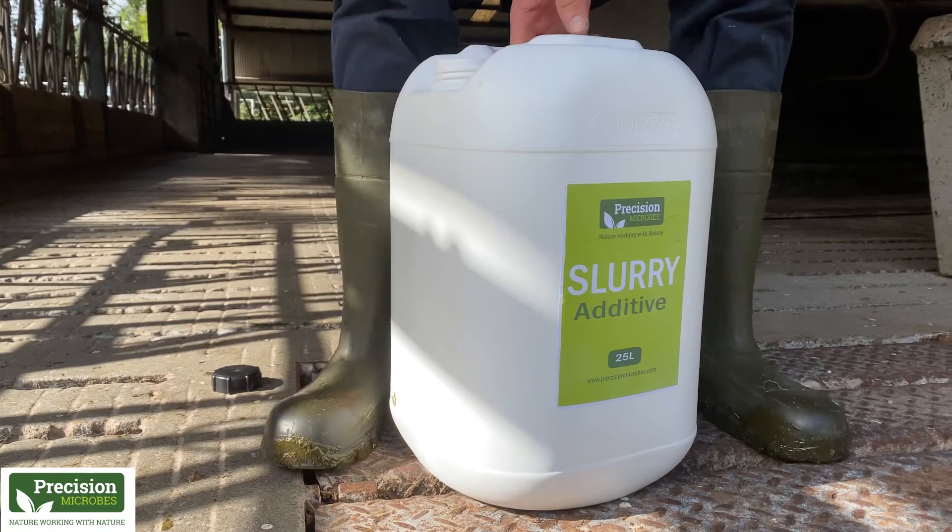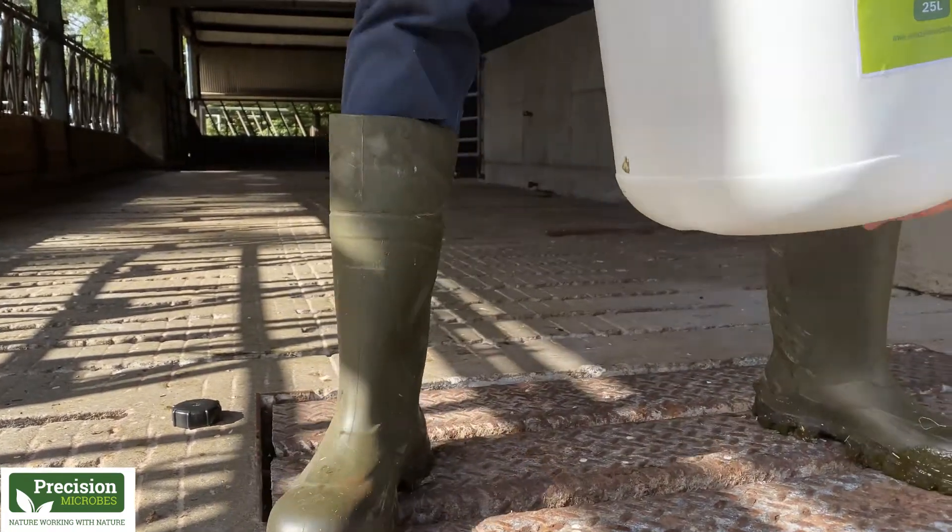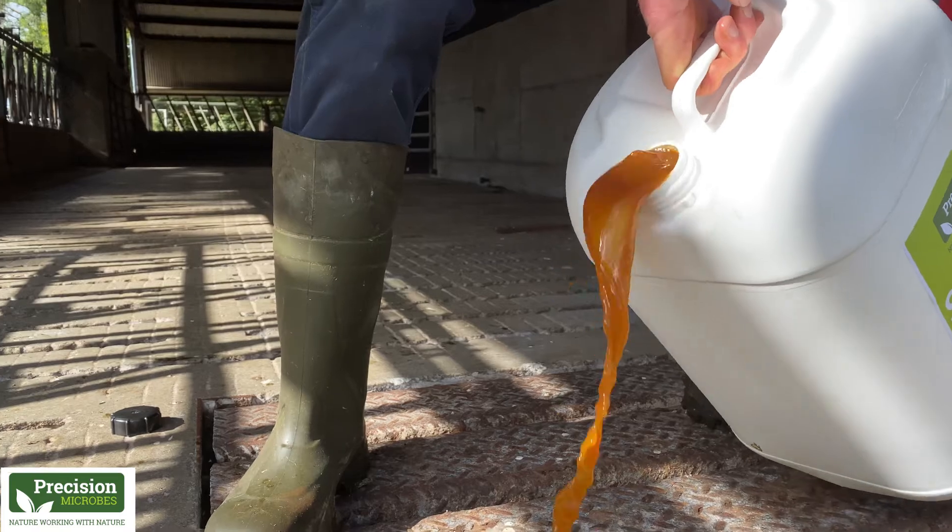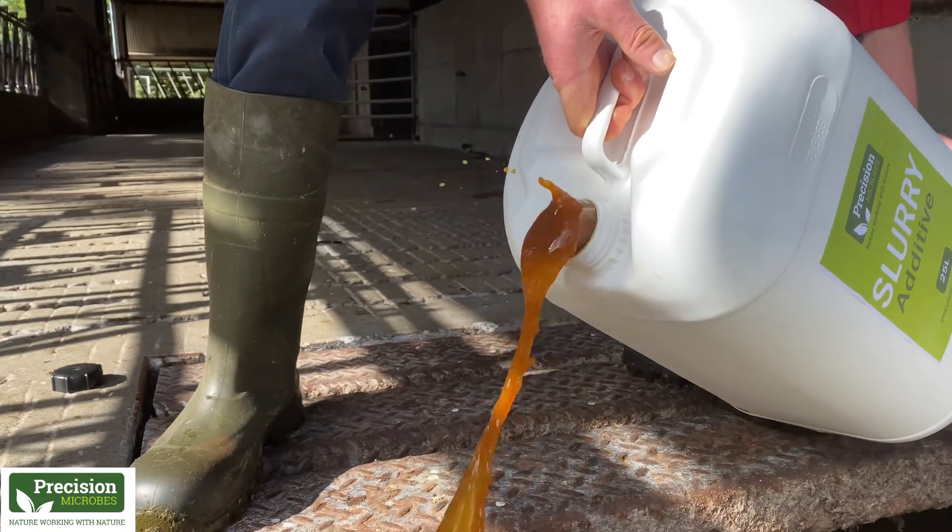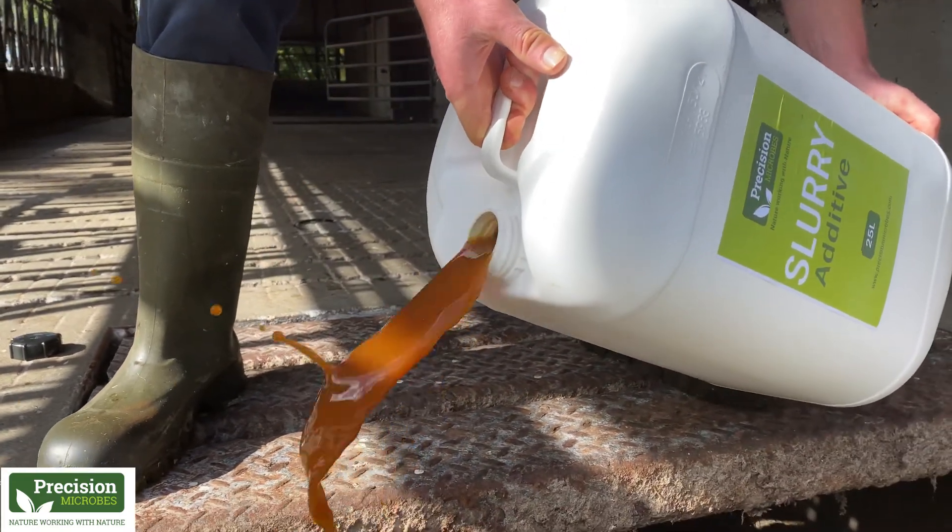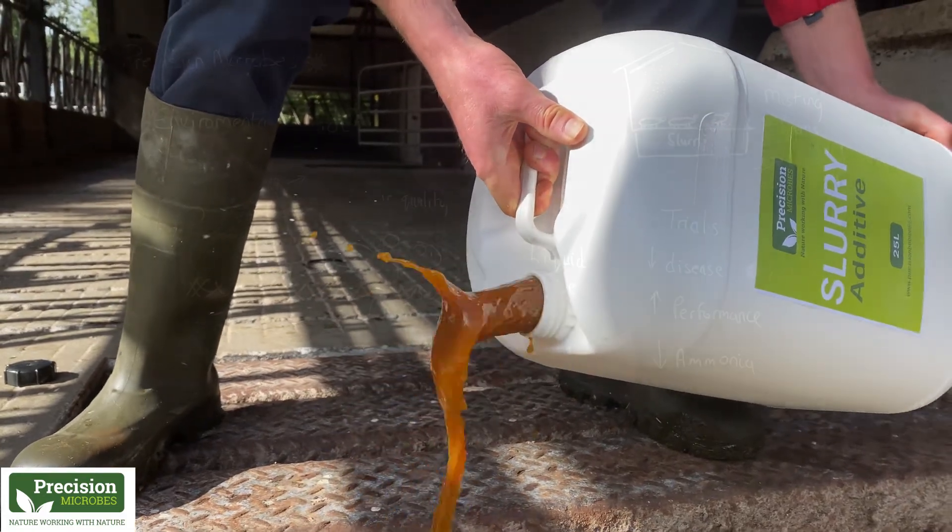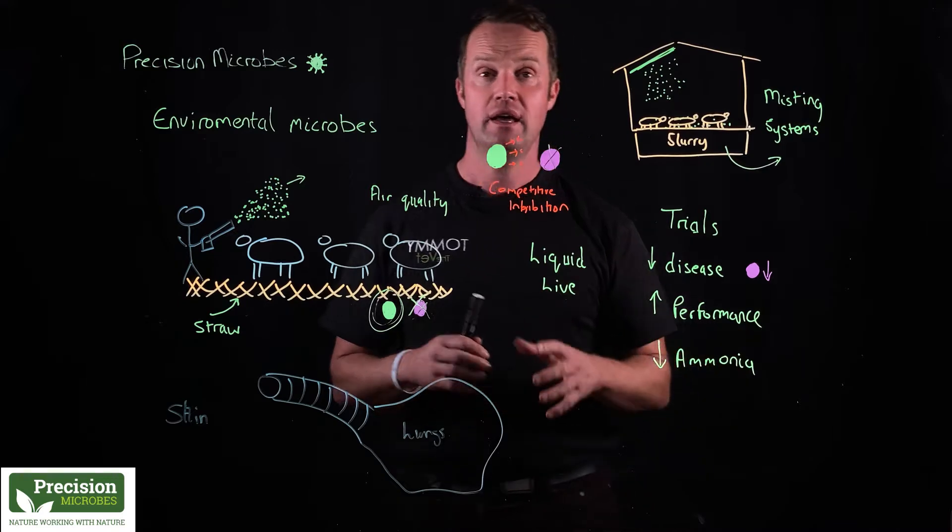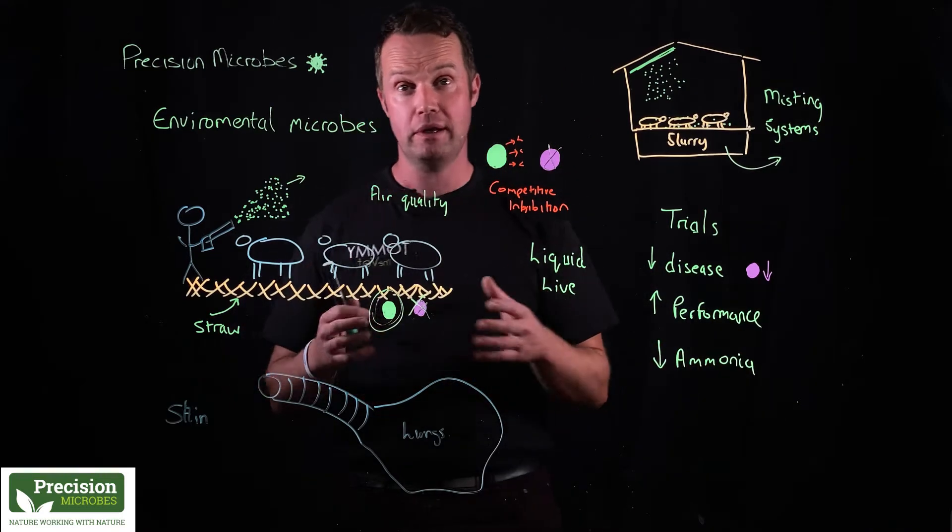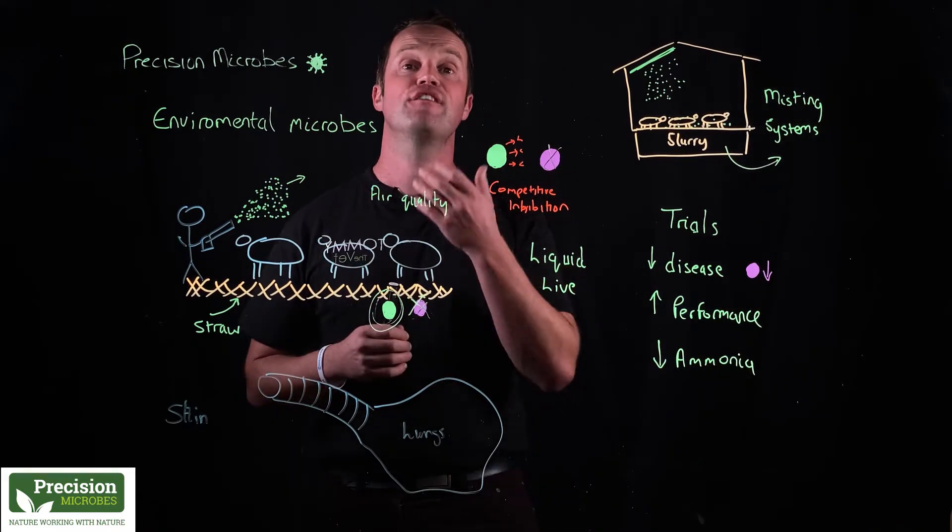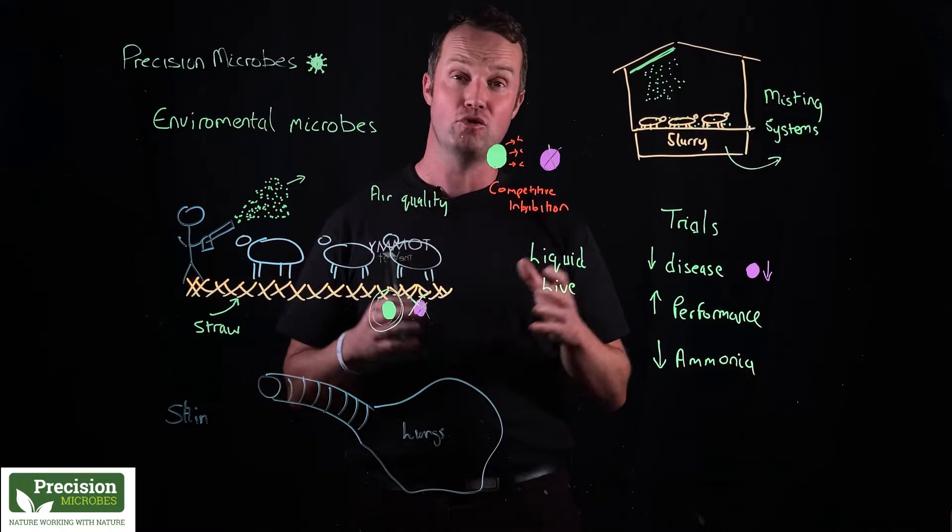We're also seeing the reduction of ammonia, which is really interesting from the Precision Microbes team point of view because we want to really follow that from an environmental perspective. We are all about using nature and harnessing the power of nature. If we think about ammonia and its role in air quality, particularly indoors with animals, it affects the cilia of the respiratory system.